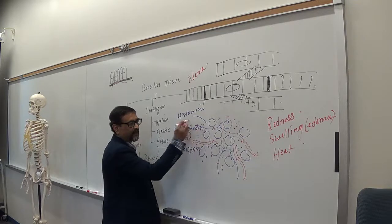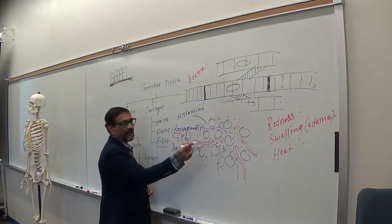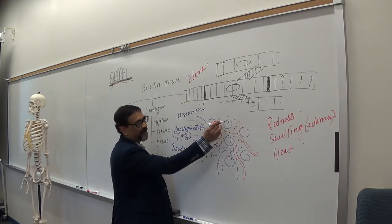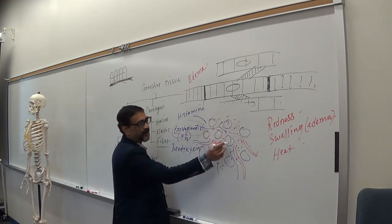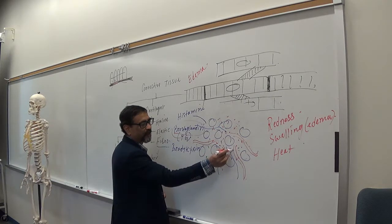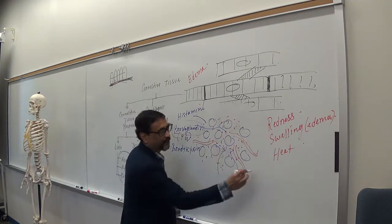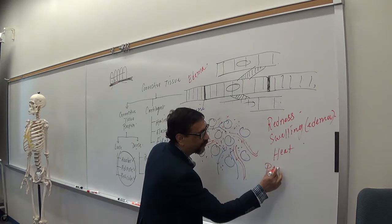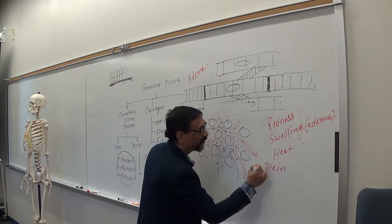So the four signs of inflammation — redness, swelling or edema, heat, and pain — are all explained by the chemicals released from injured tissue, particularly histamine causing vasodilation and fluid leakage, and prostaglandins stimulating nerve endings to produce pain.